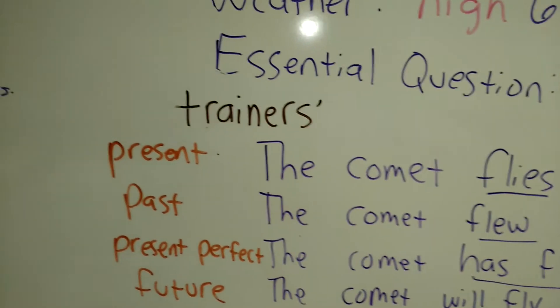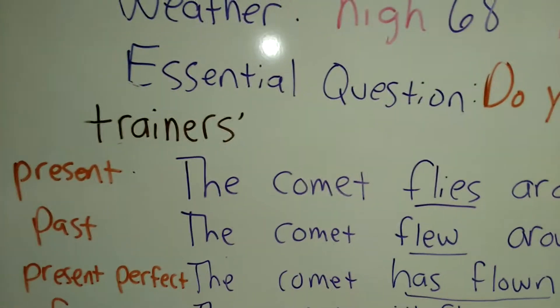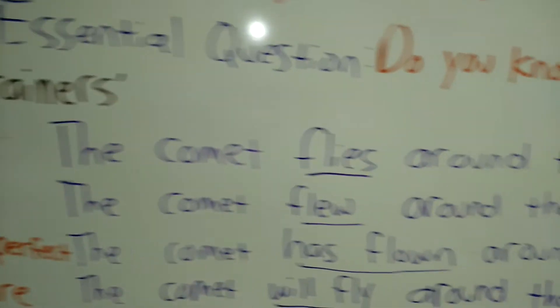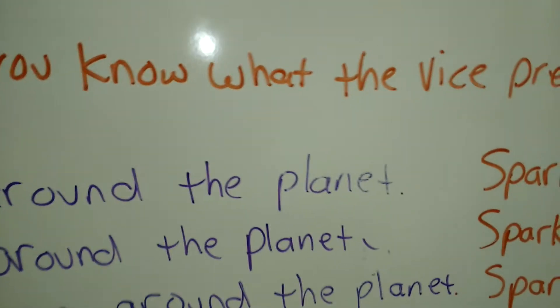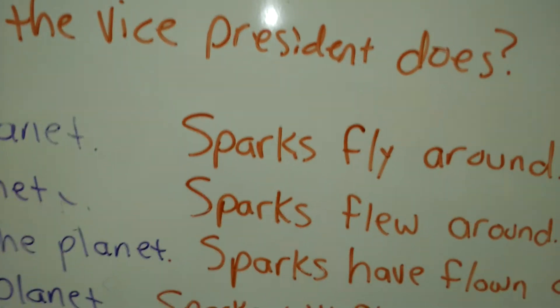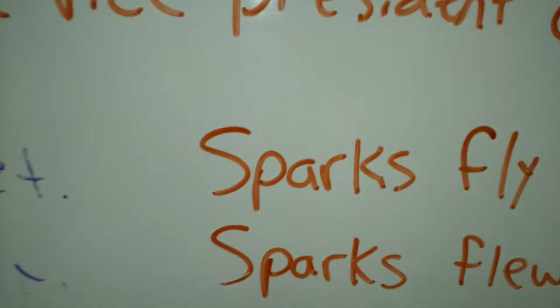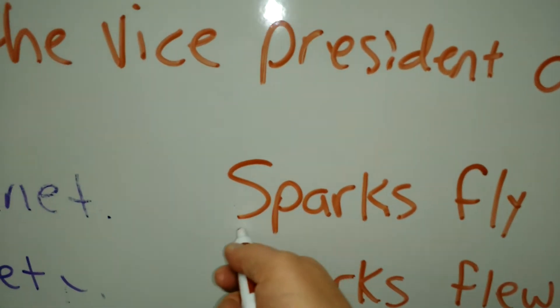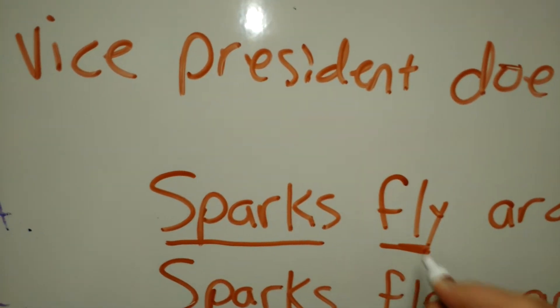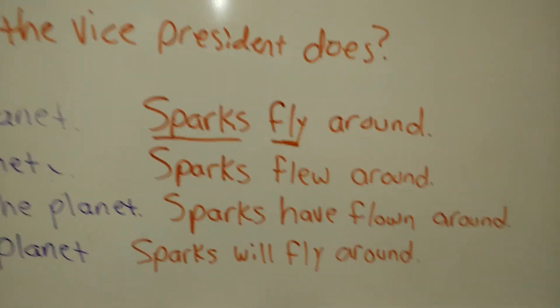So let's take a review. So the present tense, yesterday it was, the comet flies around the planet. But in this case, sparks is plural or many. So we use fly. So sparks fly around.